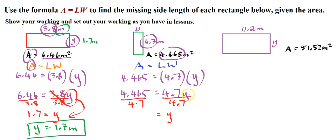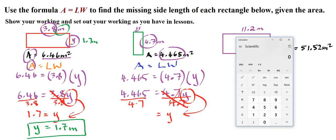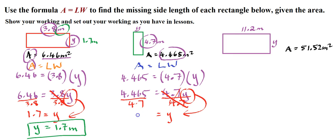So multiplied by 4.7. Divide by 4.7 cancels out. We're left with Y, which is what we want. And then we're left on this side with 4.465 divided by 4.7. Probably should use a calculator. We're allowed to use one, so let's use it. So 4.465 divided by 4.7. So what's the value there? So 0.95.